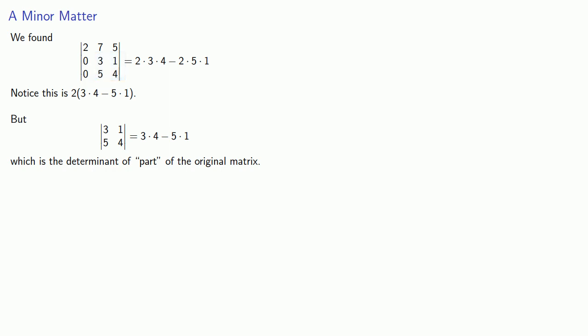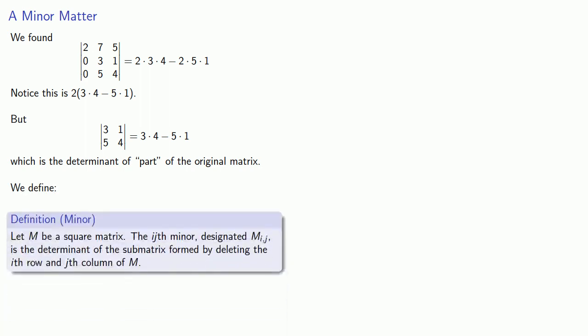And this particular type of expression shows up a lot when we find determinants, and so it's worth defining a minor as follows. Let M be a square matrix. The ijth minor, designated M_ij, is the determinant of the submatrix formed by deleting the i-th row and j-th column of M.